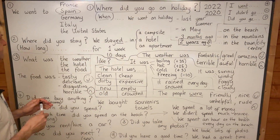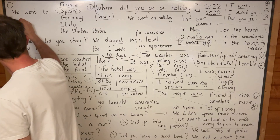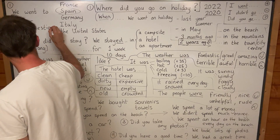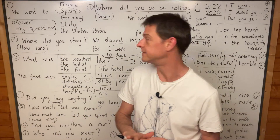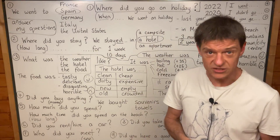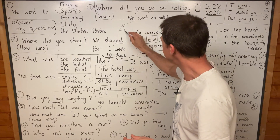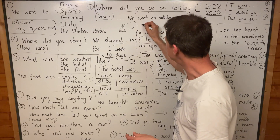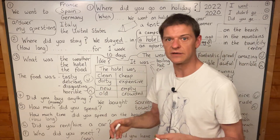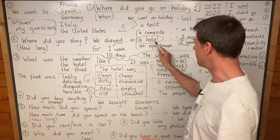Question number two — answer my questions. Where did you stay? Two years ago we stayed in a hotel. Did you stay in a hotel? Did you stay in a campsite, in a tent? Did you stay in an apartment — like a flat, but an apartment? There are different places you can stay: a campsite, a hotel, an apartment.